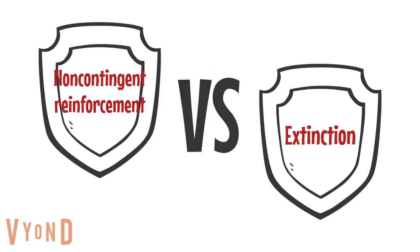The last misuse is confusing non-contingent reinforcement (NCR) and actual extinction. With NCR, we're not withholding reinforcers that maintain the problem behavior — we're giving that reinforcement on a fixed interval. This is more of an abolishing operation; it's an antecedent intervention, whereas extinction is a reactive procedure. In NCR, you're diminishing the behavior by changing the antecedent stimuli; in extinction, you're changing the consequence stimuli.